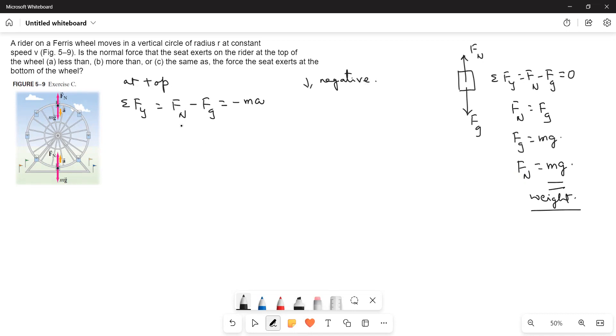Therefore, Fn is equal to Fg minus Ma. If Fg is nothing but Mg, therefore Fn is equal to Mg minus Ma. Therefore, Fn is equal to Mg minus Ma.